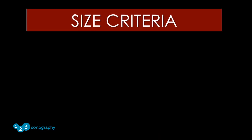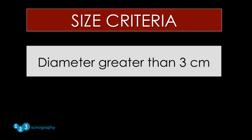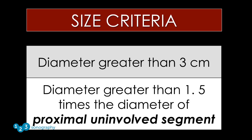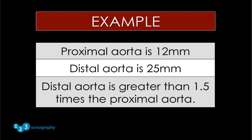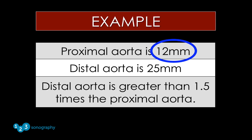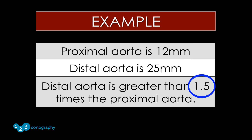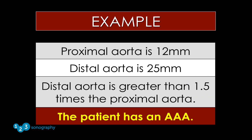The size criteria for the diagnosis of abdominal aortic aneurysm uses two parameters: if the diameter of the abdominal aorta is greater than 30 millimeters, or if the diameter is 1.5 times greater than the proximal uninvolved segment. For example, if the proximal aorta measures 12 millimeters and the distal aorta measures 25 millimeters, the distal aorta is greater than 1.5 times the proximal aorta, and the patient has an abdominal aortic aneurysm.